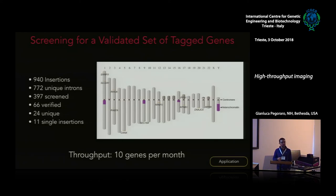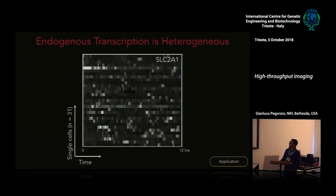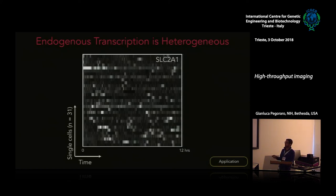Eleven genes doesn't seem much in the high-throughput imaging world, but we can now look at about 10 genes per month — a substantial improvement over one gene per month. Looking at individual genes like SLC2A1, transcription is heterogeneous, something we could not have observed by RT-PCR or RNA-seq alone. This technique provides a new view of transcription with single-cell time-profile information.